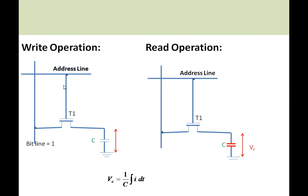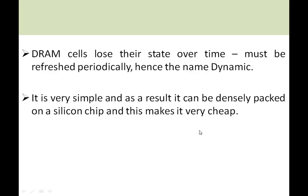Here you can see the write operation: whenever bit 1 needs to be written to the DRAM memory cell, the bit line is made 1, the address line (word line) is activated, and T1 — the pass transistor — is switched on. Current flows into the capacitor and voltage builds up according to the capacitor charging equation. For the read operation, the address line is activated, T1 is switched on, the capacitor voltage is read, and the bit line value becomes 1.